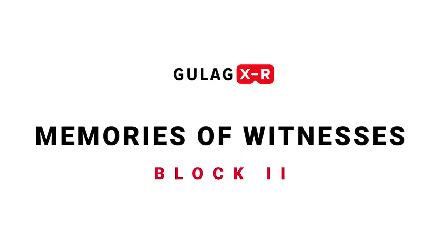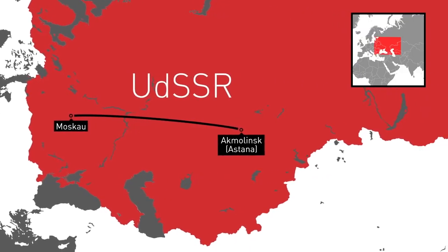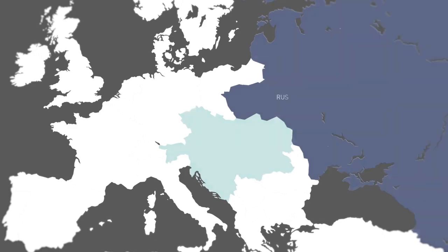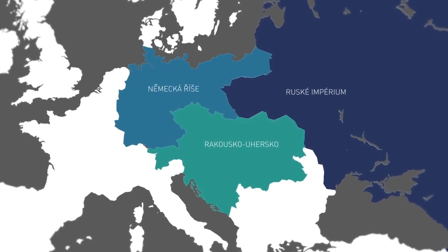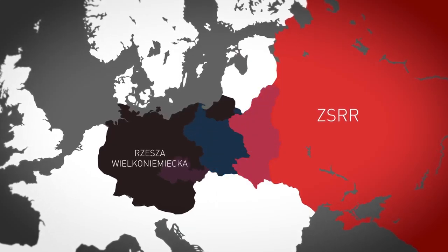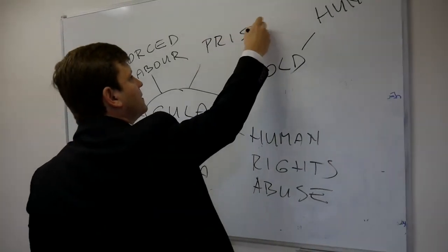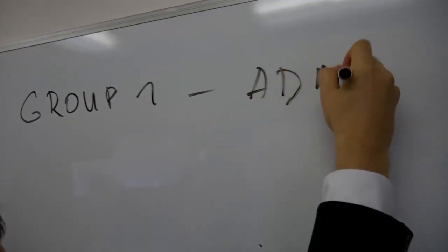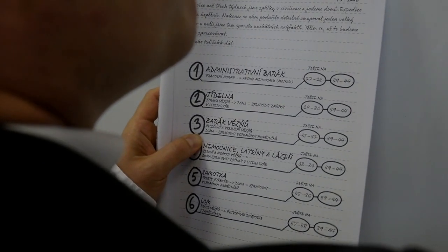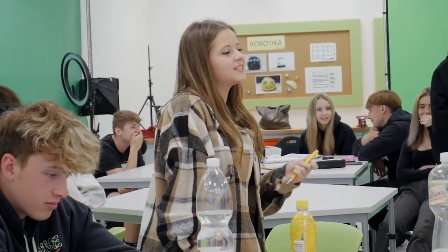Then we have another block: memories of witnesses — videos of KULAK survivors who tell the stories of their life and what they experienced during KULAK imprisonment. This can connect the big history touched in the previous video with a personal perspective. We have a total of 10 videos: two from the Czech Republic, two from Slovakia, two from Poland, two from Germany, and two from Russia. You can show one selected video and discuss it with students, or divide the class into smaller groups, assign one video to each group, and then discuss together and try to find similarities between their stories.